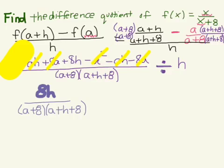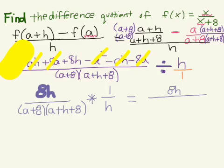In order to divide fractions, we change our division sign to multiplication and take the reciprocal of our second term. Just like with whole numbers or integers, we can put h over 1, and if we take the reciprocal that becomes 1 over h. So to multiply fractions, we multiply our numerators together — we have 8h — and multiply our denominators together — we have h times a plus 8 times a plus h plus 8.